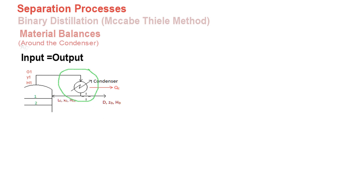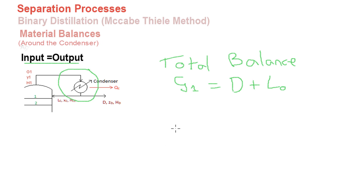The streams that are exiting are the distillate product and the liquid flowing back into the column. Utilizing this information together with input equals output, we can now develop our material balance. The first balance we develop is the total balance. Input is equal to output: the input stream is the vapor leaving the column, G1. That is equal to the two output streams, D and L0, so G1 = D + L0.